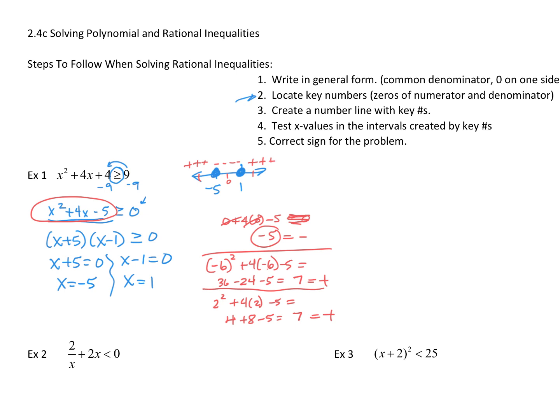Now the question is, what part of this is my solution? It depends on your inequality — it is a greater than or equal to, and we need greater than or equal to 0, which translates to a positive number. Positive numbers are greater than 0, so my solution is where the plus signs are. My answer is from negative infinity to negative 5 with a bracket, then from 1 to positive infinity. This is my answer set.